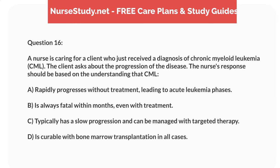Question 16. A nurse is caring for a client who just received a diagnosis of chronic myeloid leukemia, CML. The client asks about the progression of the disease. The nurse's response should be based on the understanding that CML: A. Rapidly progresses without treatment, leading to acute leukemia phases. B. Is always fatal within months, even with treatment. C. Typically has a slow progression and can be managed with targeted therapy. D. Is curable with bone marrow transplantation in all cases.